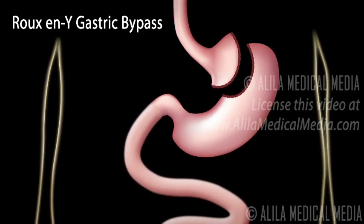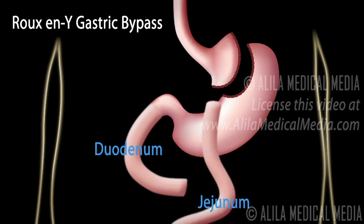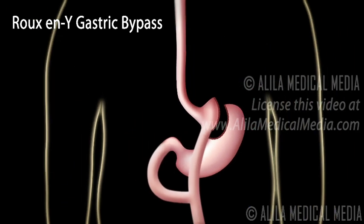The intestine is cut at about 45 cm or 18 inches down from the end of the stomach. The first part of the intestine, the duodenum, will be bypassed. The top end of the second part, the jejunum, is pulled up and connected to the gastric pouch created in step 1. The lower end of the duodenum is reconnected to the jejunum at a lower point. The new configuration has a shape of Y, hence the name of the procedure.